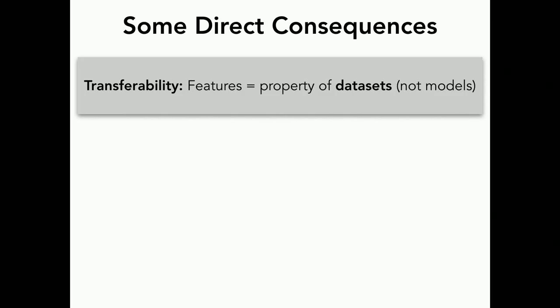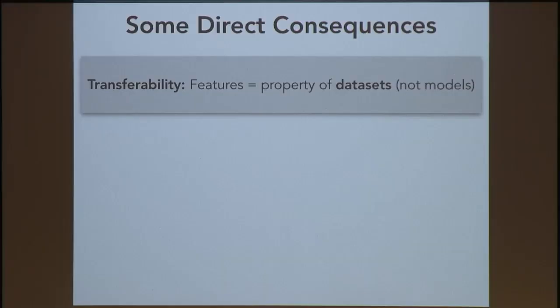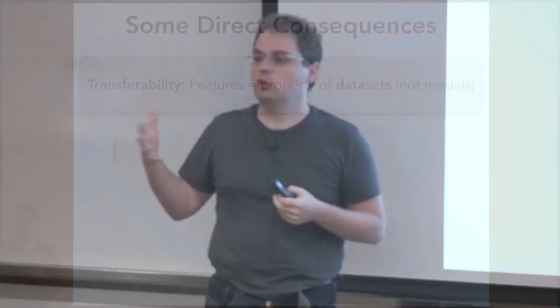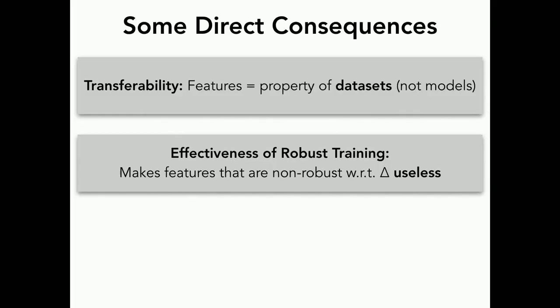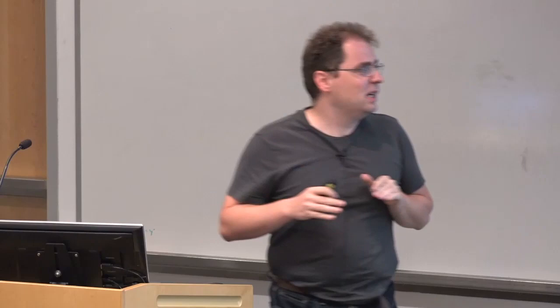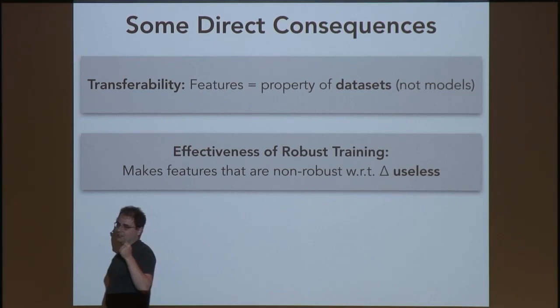Transferability of adversarial perturbations also now makes sense: features are a property of the dataset, not a model. Any model trained on the same data is likely to use the same non-robust features for prediction, so changing those features leads to misclassification. Also, why robust training is effective: what it's essentially trying to do is make all the non-robust patterns in the data useless for prediction.